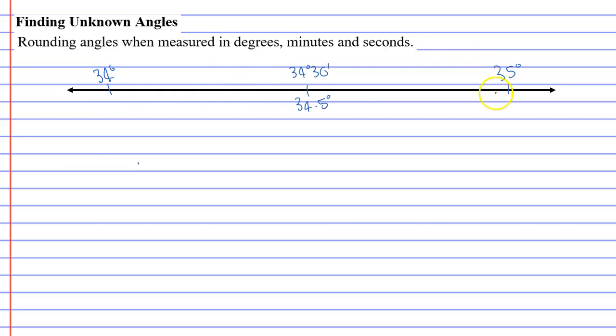Usually between two numbers you would have 10 intervals, but when you're doing degrees minutes and seconds it would actually be better to have six intervals. You would have 34 degrees 10 minutes, 34 degrees 20 minutes, then the 30, 34 degrees 40 minutes and 34 degrees 50 minutes.